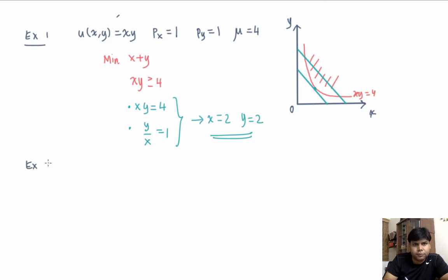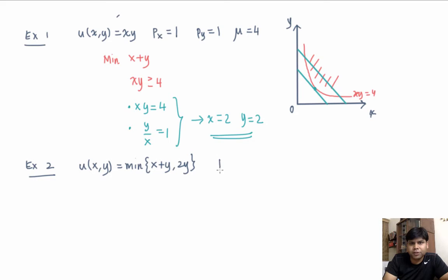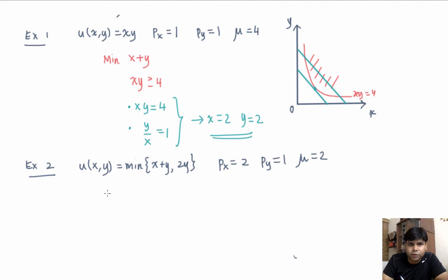For example two, suppose the utility function is the minimum of (x plus y) and 2y, and suppose px is 2, py is 1, and mu is 2. We want to find the Hicksian demand. We can write this utility function in a convenient form: it equals x plus y if x plus y is less than 2y, which is equivalent to x less than or equal to y, and it takes the value 2y if x is greater than y.